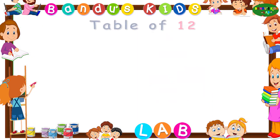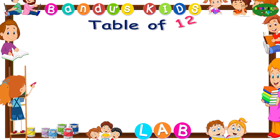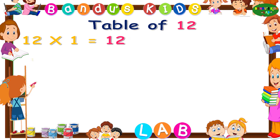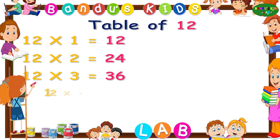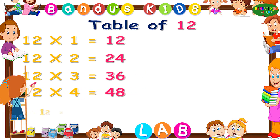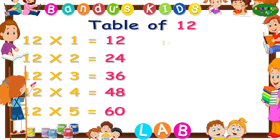Now let's revise the table of 12 by singing. 12 ones are 12. 12 twos are 24. 12 threes are 36. 12 fours are 48. 12 fives are 60. 12 sixes are 72.